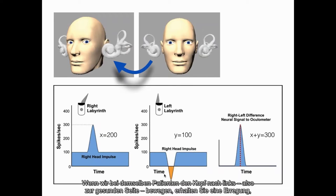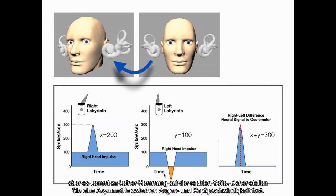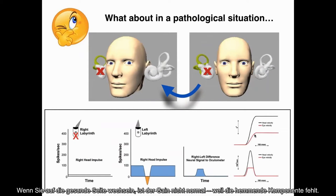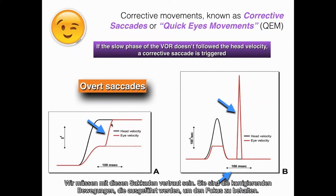When we move the head to the left — the healthy side — we get excitation on the left but no inhibition on the right side. That's why you have a mismatch between eye and head velocity. This also explains why sometimes a patient who had a vestibular nerve section on one side and you do the impulse to the healthy side — the gain is not fully normal, because of the absence of the inhibitory component from the damaged side.